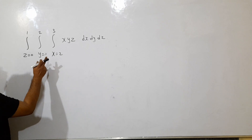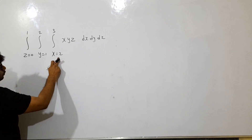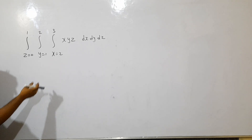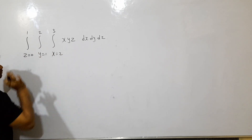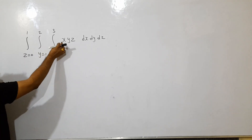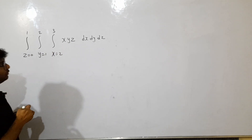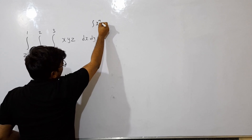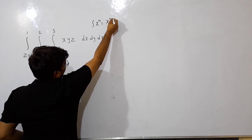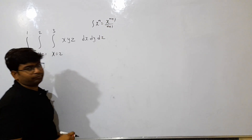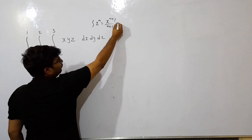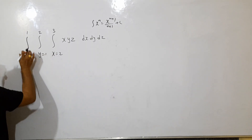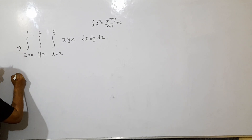So what is this? First, x applies. Integration of x applies to n. Integration of x to the power of n is equal to x to the power of n plus 1, divided by n plus 1, plus c. Okay? Simple formula. This is the question.